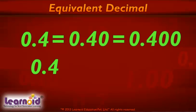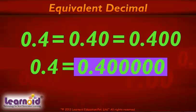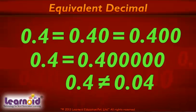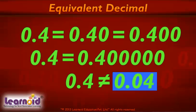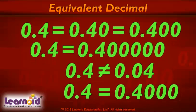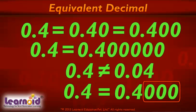0.4 is the same as 0.400, but 0.4 is not the same as 0.04. To find an equivalent decimal number, we should ignore all zeros on the right side of the number after the decimal.